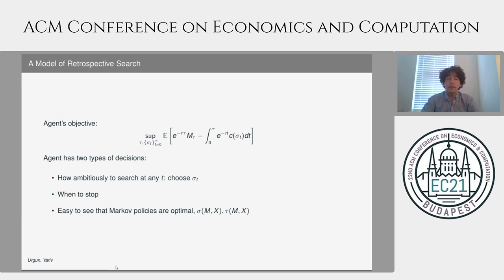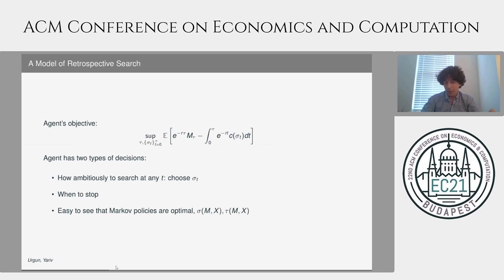With these ingredients at hand, we can write what the agent's objective is. The goal of our agent is to maximize the maximum that they will encounter during their search, which is the first term, net of the cost that they accrue during the search, which is the second term. Our agent has two types of decisions at every point in time: they are going to be choosing both the control sigma — their scope — and then when to conclude the search, tau. It is easy to see that Markov policies are going to be optimal, but the Markov state is a tuple here — both the maximum and the current observation come into play.